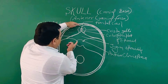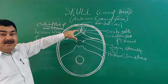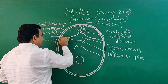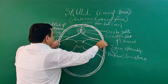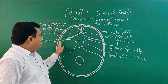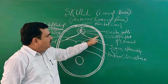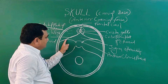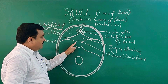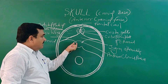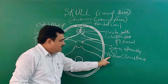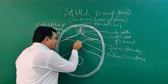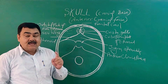Looking at the boundary of the anterior cranial fossa: from here to here, this part is the anterior cranial fossa. The anterior and lateral side boundary is formed by the frontal bone. The posterior boundary is formed by the lesser wing of ethmoid bone. And here is the anterior clinoid process, which is also part of the posterior boundary.